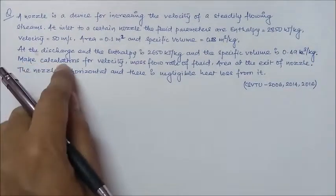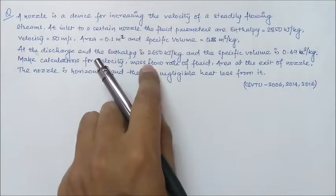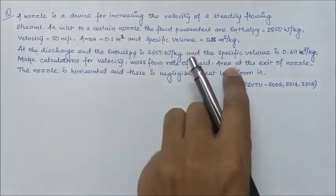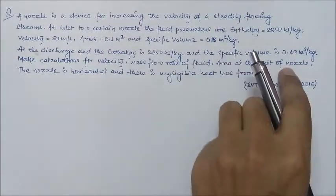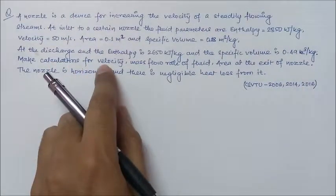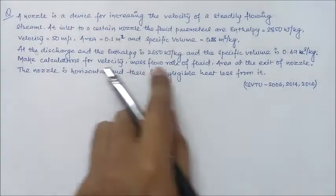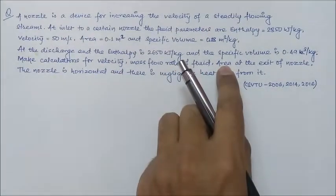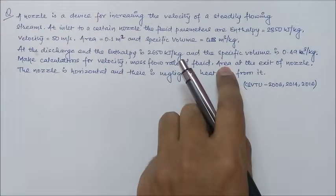The question says make calculations for velocity, mass flow rate of the fluid, and area at the exit of the nozzle. It wants the discharge velocity, the mass flow rate, and the cross-sectional area at the discharge end.